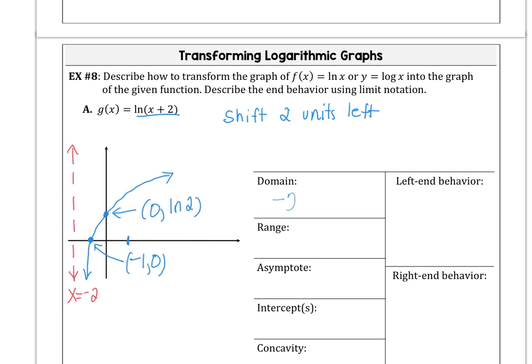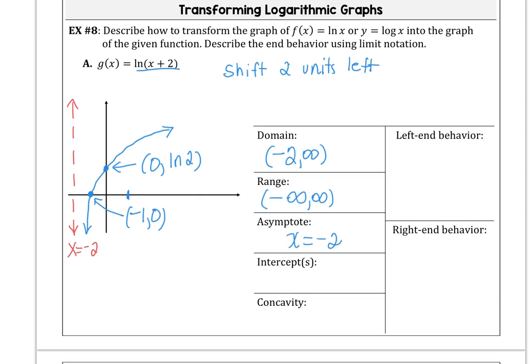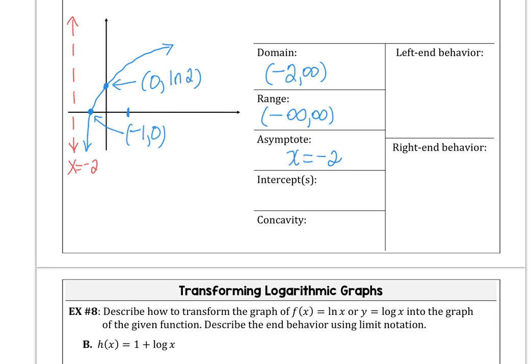The domain is negative 2 to infinity. The range is all reals. The vertical asymptote is at negative 2. The x-intercept is negative 1,0. And the y-intercept we said was 0, natural log of 2. Our function is concave down, and the reason is the rate of change is decreasing.